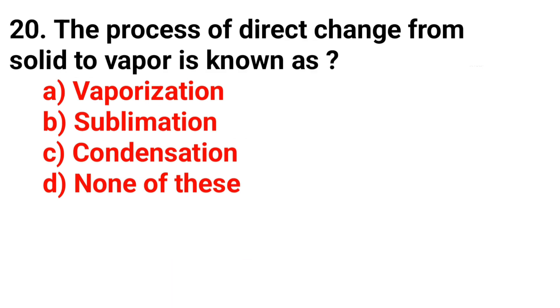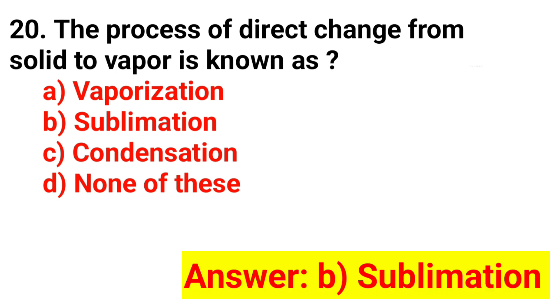Question 20. The process of direct change from solid to vapor is known as? The answer is Option B: Sublimation.